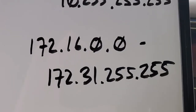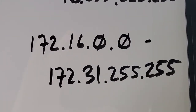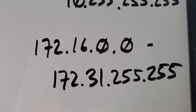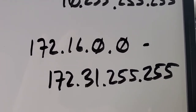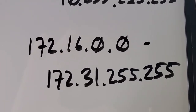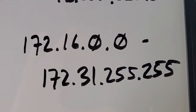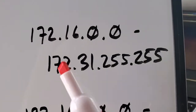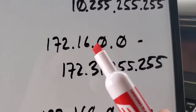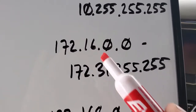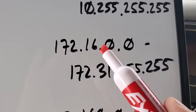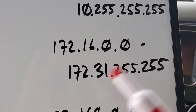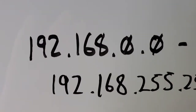Same with this range: if it starts with 172.16 all the way through 172.31.255.255, everything in between there — so 16 to 31 for the second octet — everything in between there is all private IP addresses.